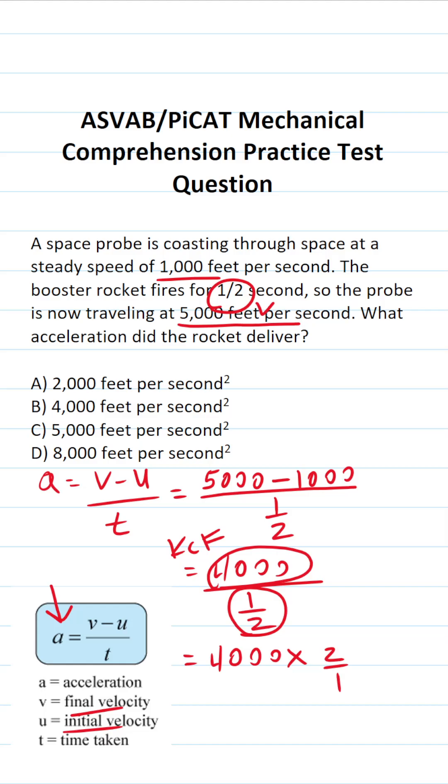What is 2 divided by 1? It's just 2. So this becomes 4,000 times 2, which is 8,000. We can see that this booster rocket delivered 8,000 feet per second squared of acceleration. The answer is D.